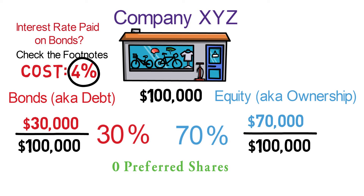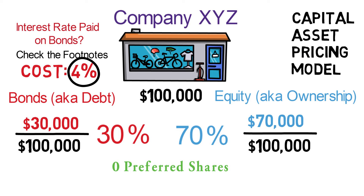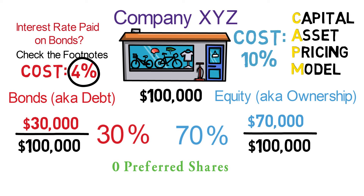Jumping over to the cost of equity — generally you would have to use something like the Capital Asset Pricing Model to come up with the cost of equity, and that's a whole different calculation. We recently published a video on the Capital Asset Pricing Model, so if you're interested in seeing how to come up with it, you can jump over to that video. But for this example, let's just assume that the cost of equity is 10%. Generally, the cost of equity is going to be higher than the cost of debt since equity shareholders bear more risk than bondholders, and therefore equity holders demand a higher rate of return. This can be thought of as what the equity investor expects the company to return for them.